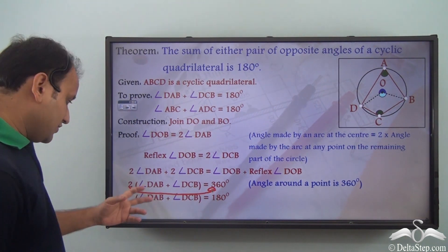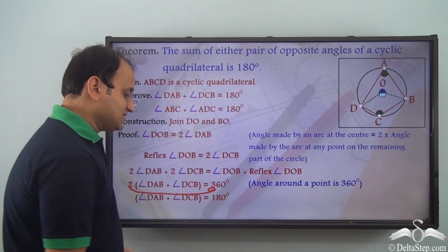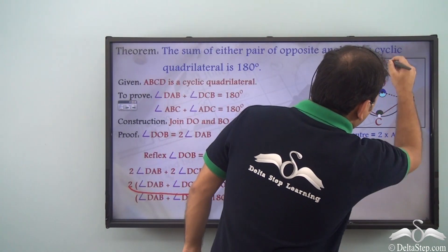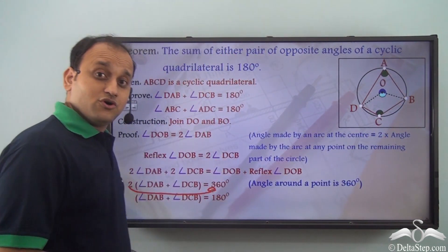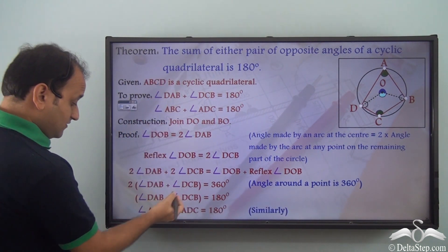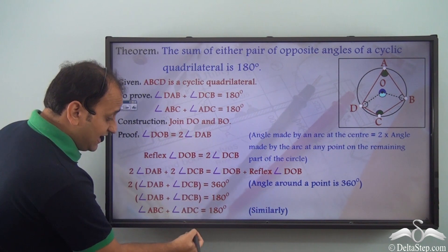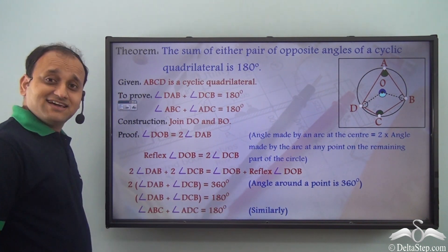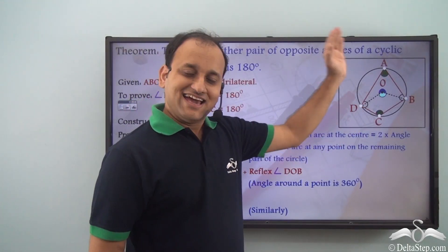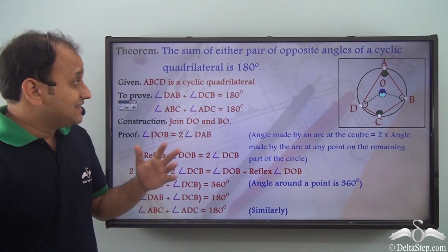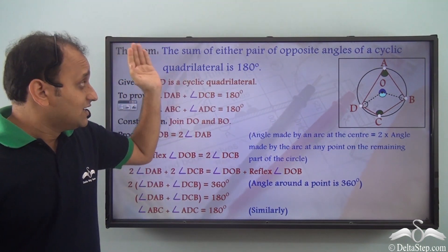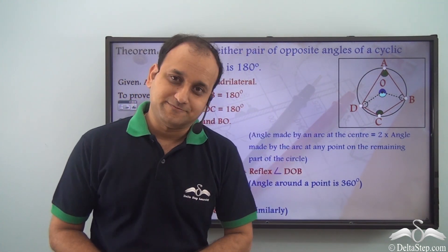So, we have proved that these opposite angles add up to 180 degrees. Similarly, we will also have angle ABC plus angle ADC equal to 180 degrees. So, even these opposite angles add up to 180 degrees. We were able to prove that the sum of either pair of opposite angles of a cyclic quadrilateral is 180 degrees.